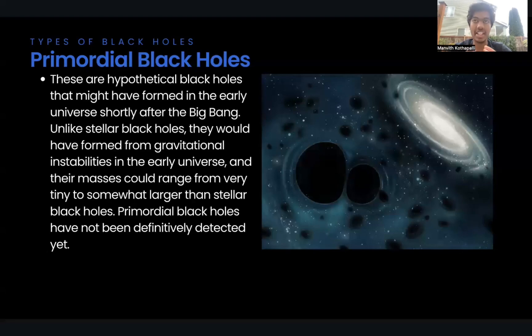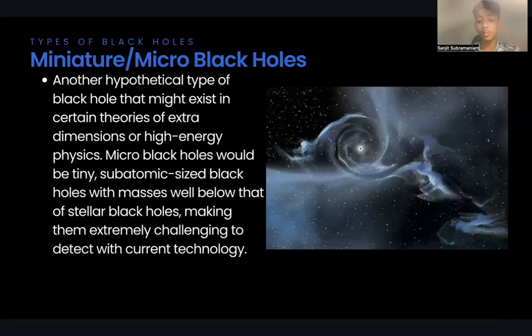What we mean by gravitational instabilities is the collapse of gas clouds or molecular clouds and whatnot. So, now Sanjit will be talking about miniature and micro black holes. Another type of hypothetical black hole is the miniature and micro black holes. These are hypothetical, so they might exist in certain theories of extra dimensions or high energy physics. Micro black holes would be tiny subatomic sized black holes with masses well below that of stellar mass black holes, making them extremely challenging to detect with current technology. Next, Manvit is going to be talking about the parts of the black hole.